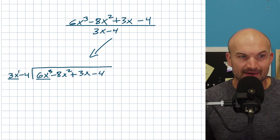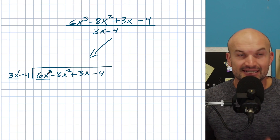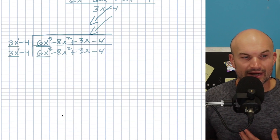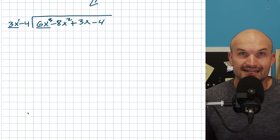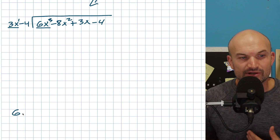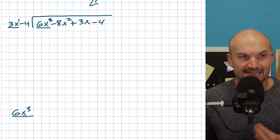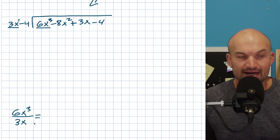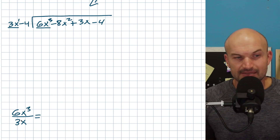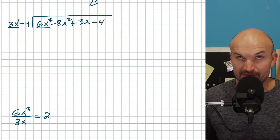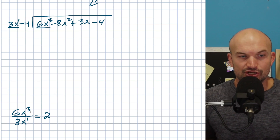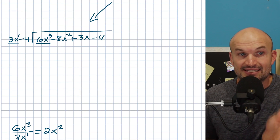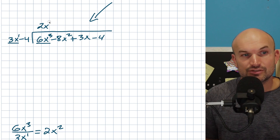The first question is: how many times does 3x evenly divide into 6x³? This is sometimes confusing, so I like to rewrite it in vertical format. Dividing 6 by 3 gives 2, and using the rules of exponents, x³ divided by x¹ gives x². So 3x evenly divides into 6x³ exactly 2x² times.